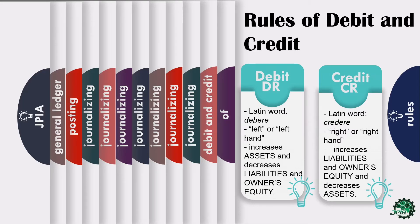Let's go to debit first. Debit came from the Latin word debere, which means to owe. It is located on the left side of the T-account, and it increases assets and decreases liabilities and owner's equity.